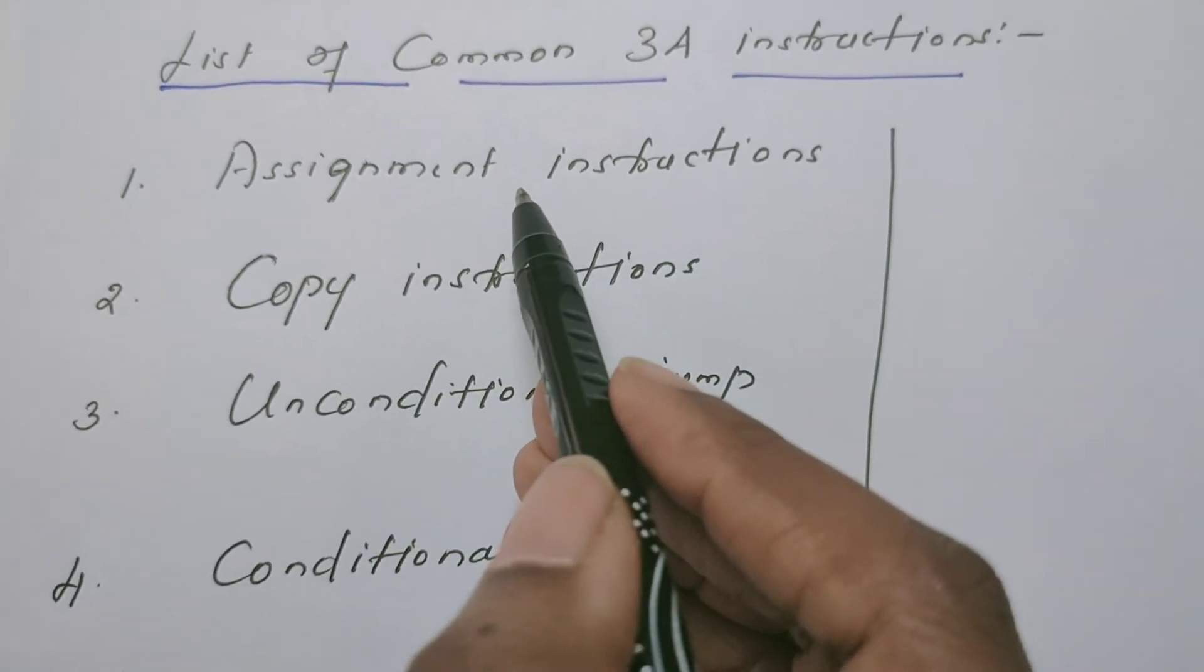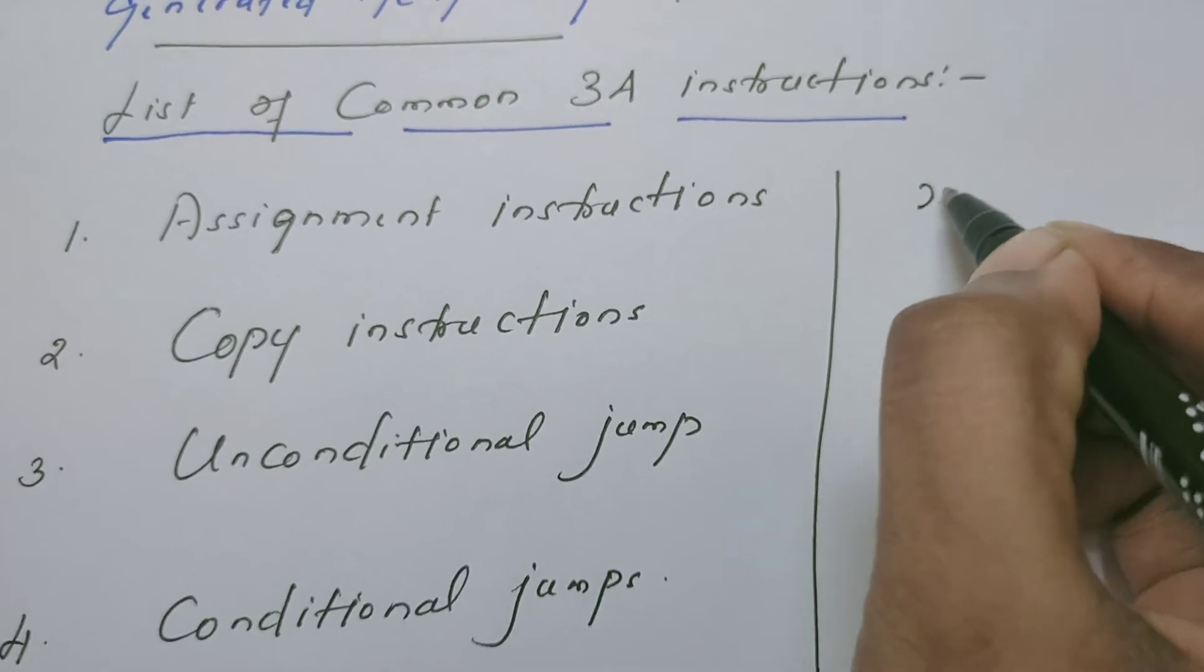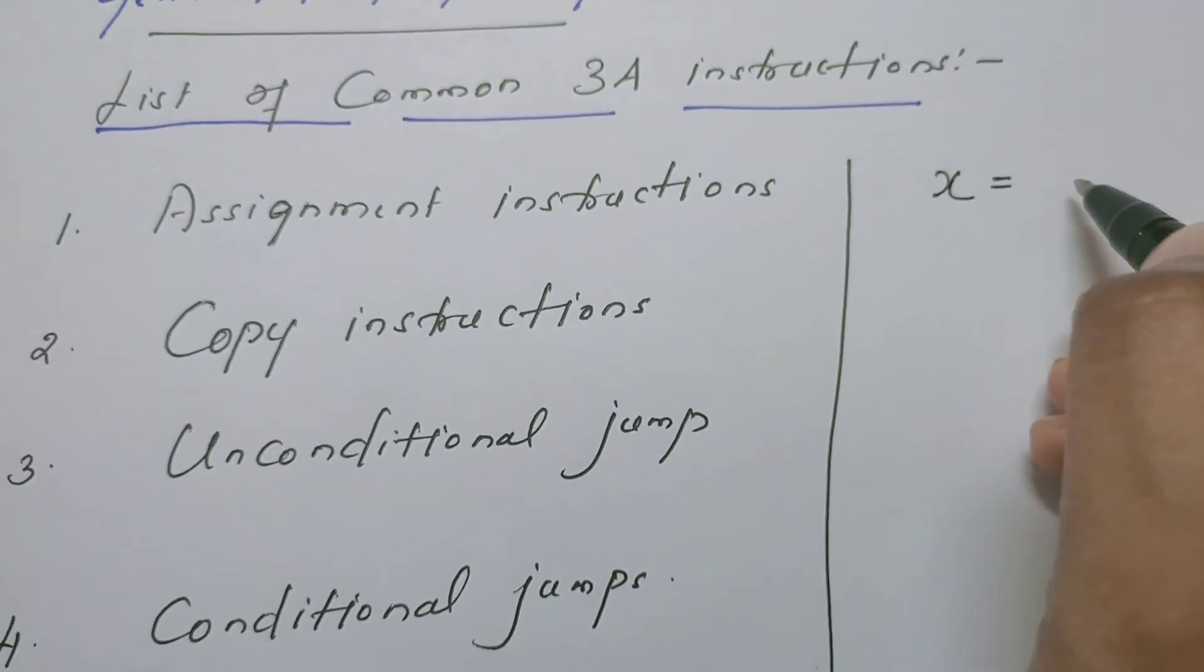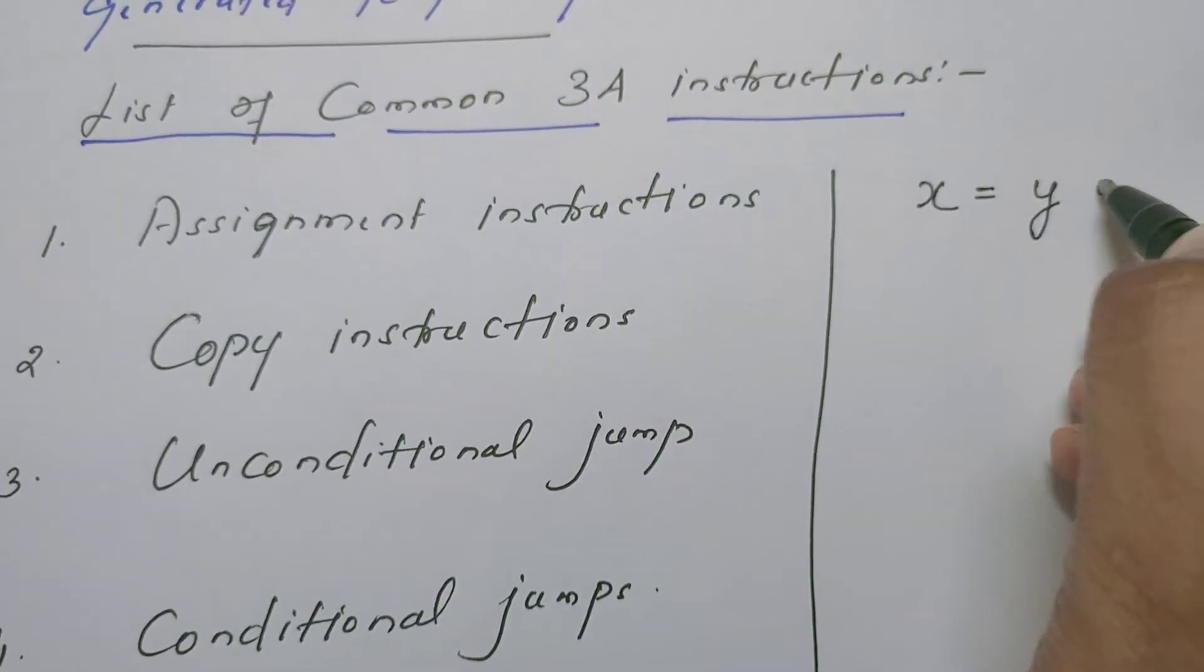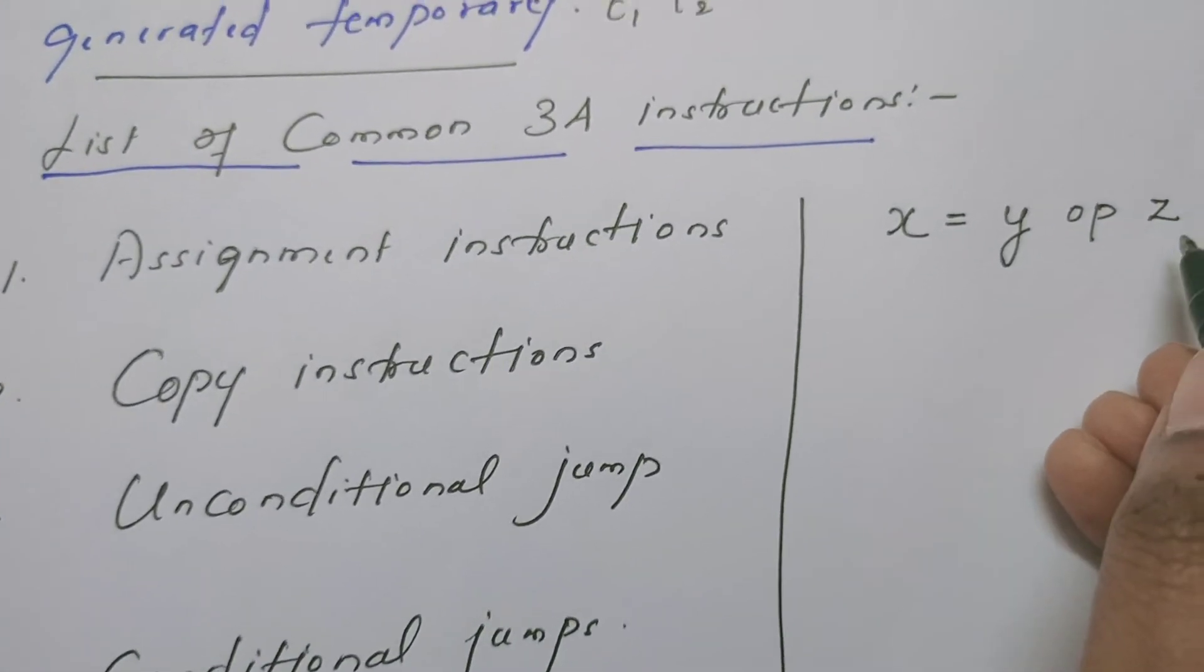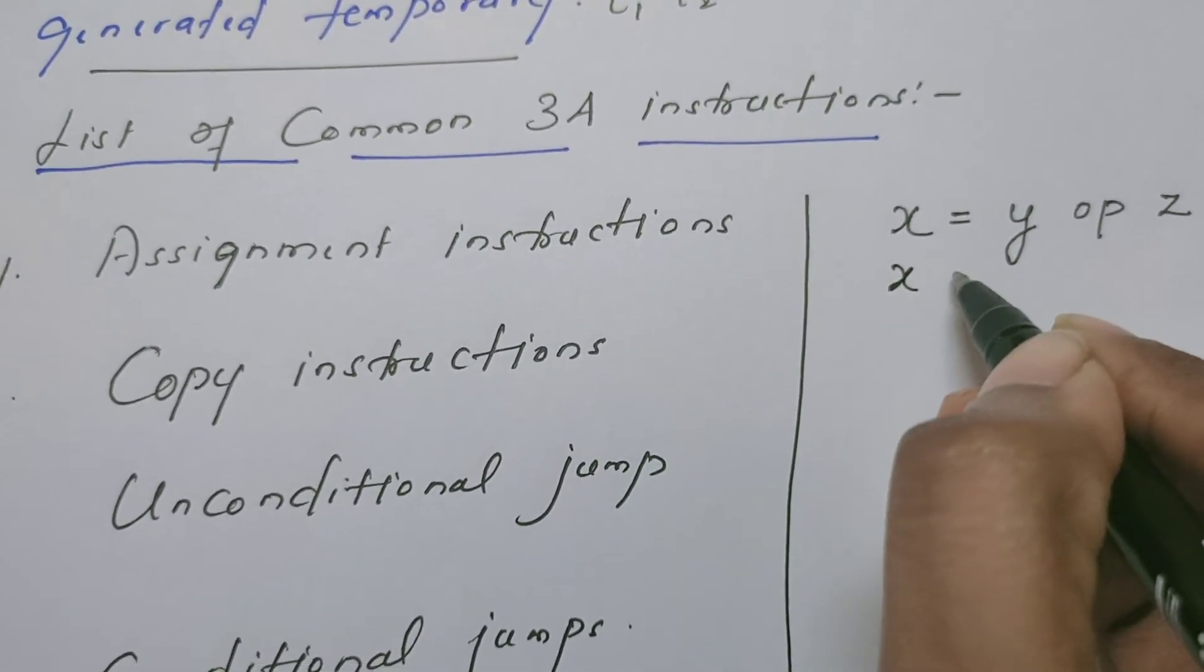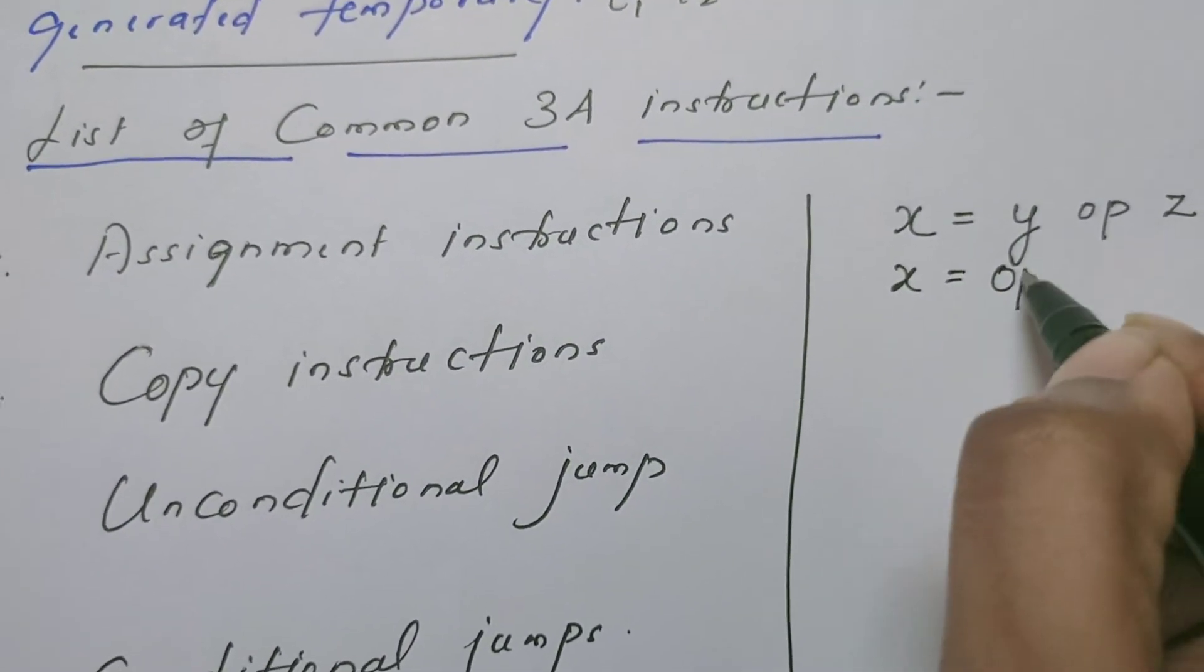Suppose in your program there are assignment instructions. The equivalent 3 address code looks like this: x is equal to y operator z. This is the format in 3 address code. Or if the operator is a unary operator, we can write like this: x is equal to operator y.